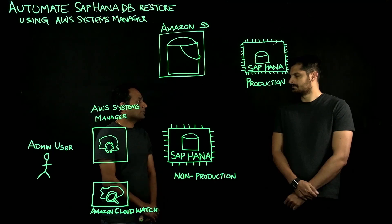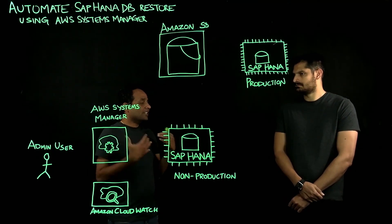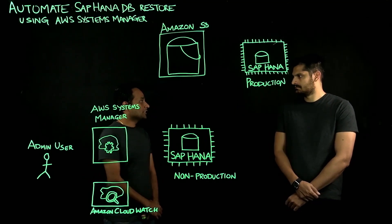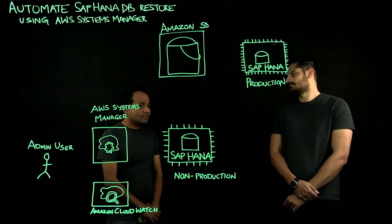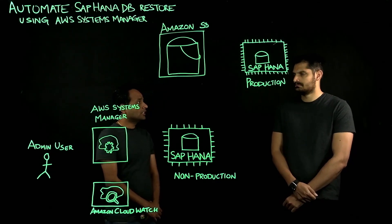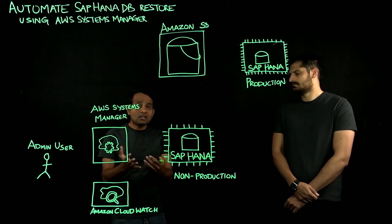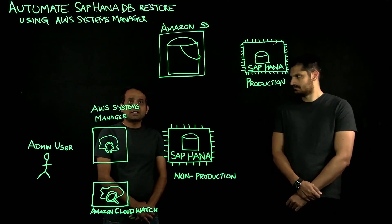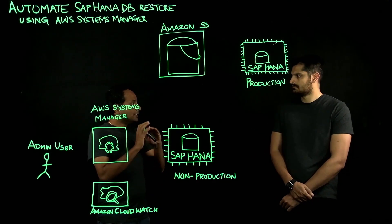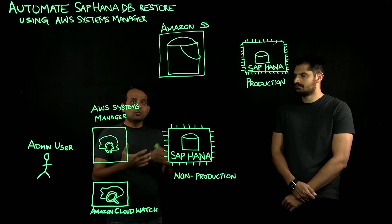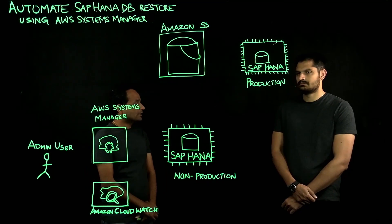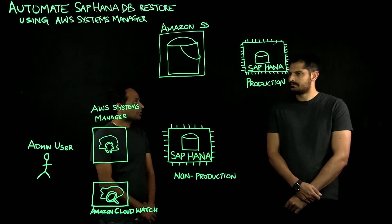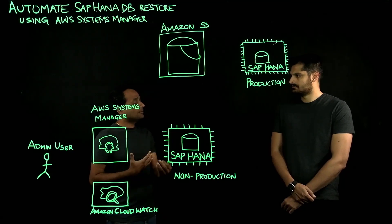Once your backup is in Amazon S3 bucket, that gives you various capabilities and opportunities to further automate and excel in your operations. One of the use cases behind that is achieving this automated restore using AWS Systems Manager documents. AWS Systems Manager gives you visibility and control of your infrastructure in AWS, and provides a unified interface for you to view operational data from multiple AWS resources within your VPC. One way to leverage this is using an AWS SSM document to solve that very problem.